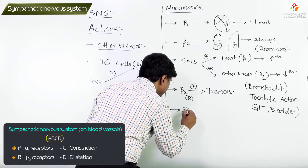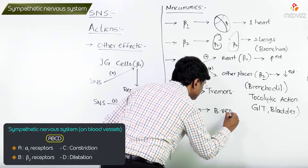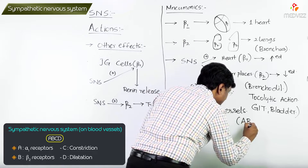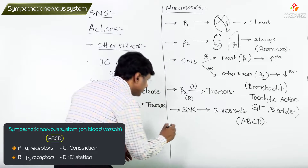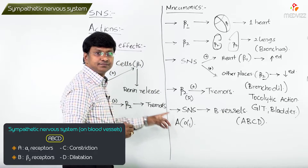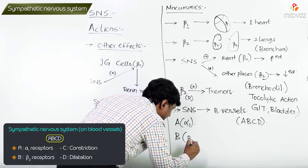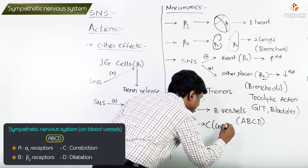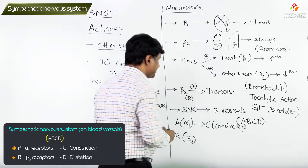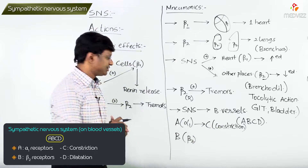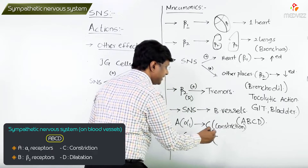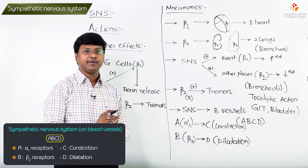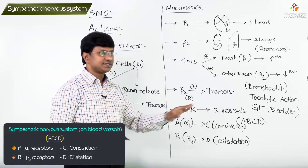To remember the effect of the sympathetic nervous system on blood vessels, use the mnemonic ABCD. A stands for alpha-1 receptors, B stands for beta-2 receptors, C stands for constriction — so if alpha-1 receptors are stimulated there will be vasoconstriction — and D stands for dilation — so if beta-2 receptors are stimulated there will be vasodilation.